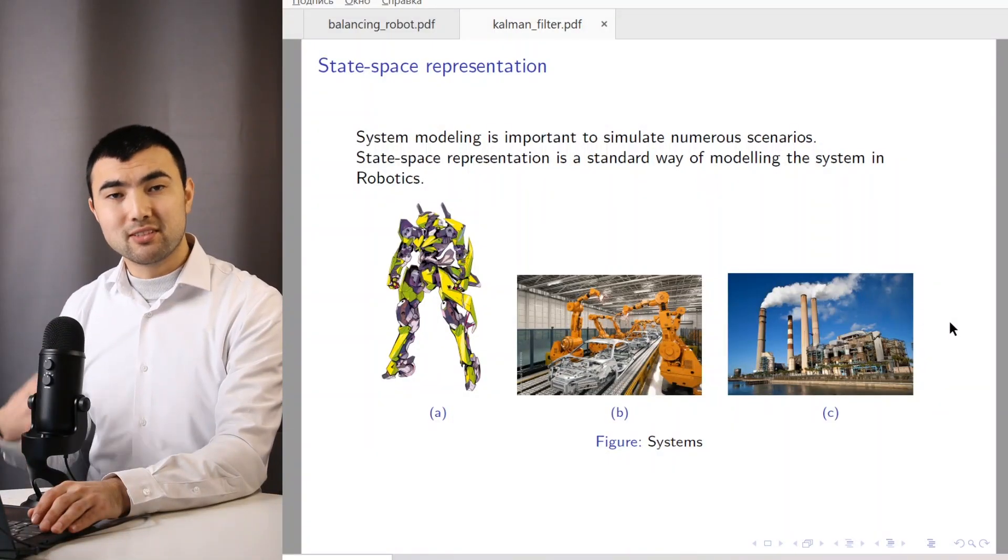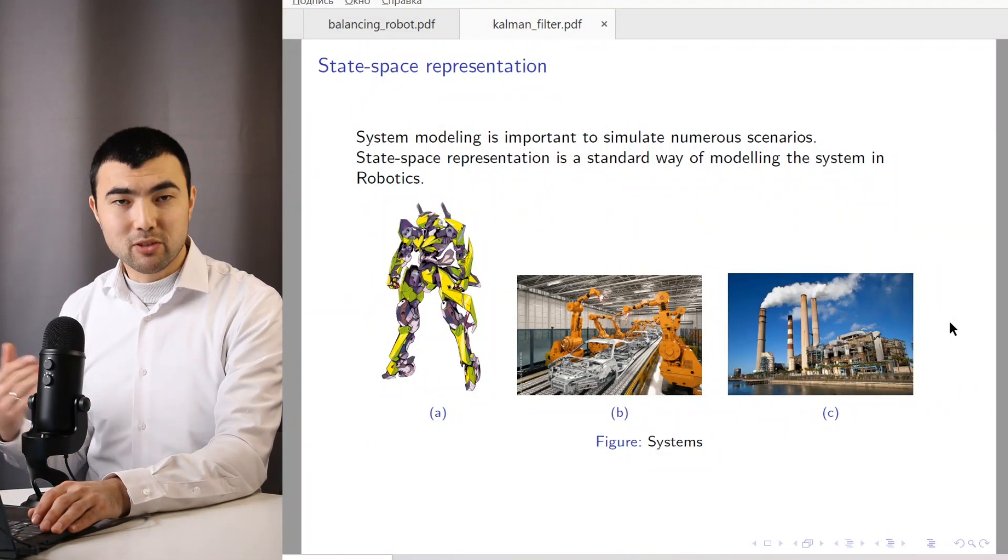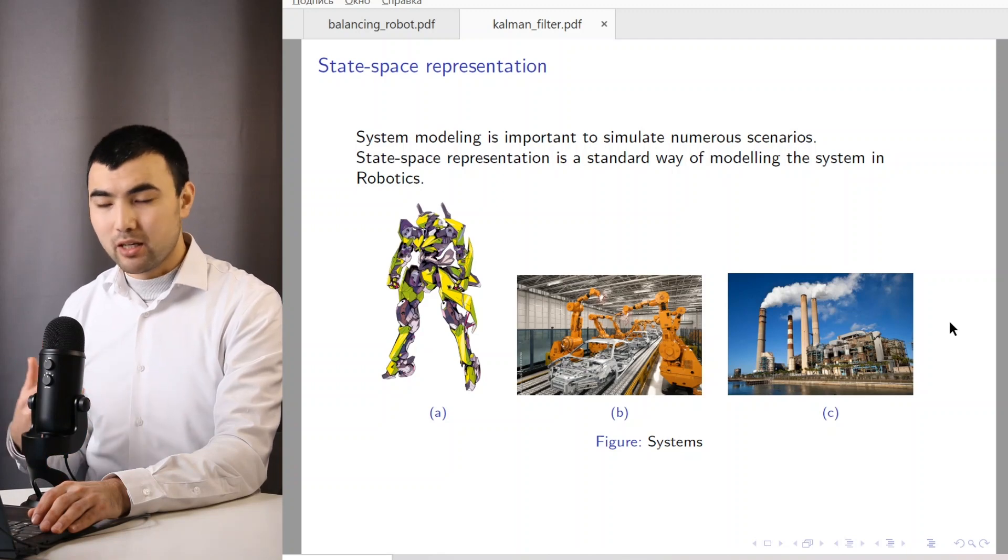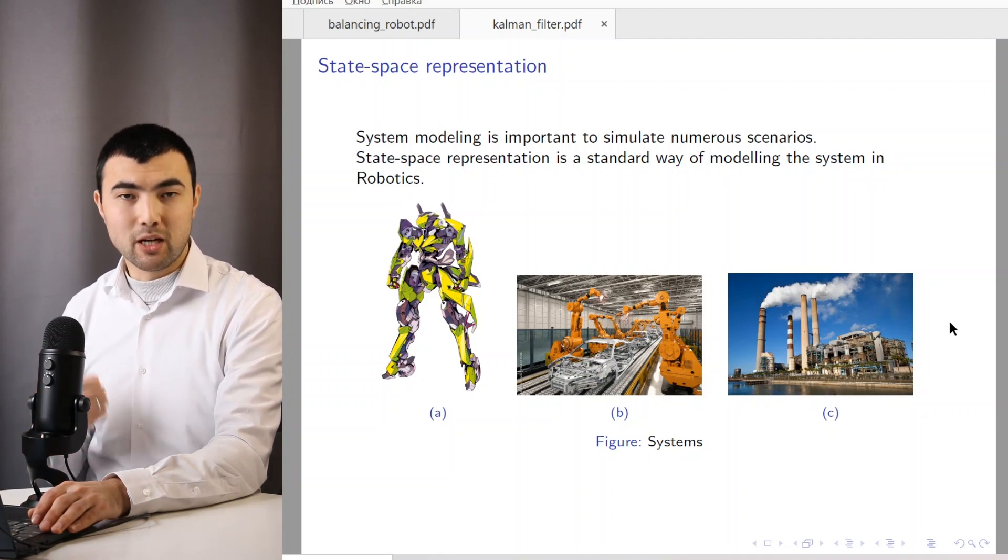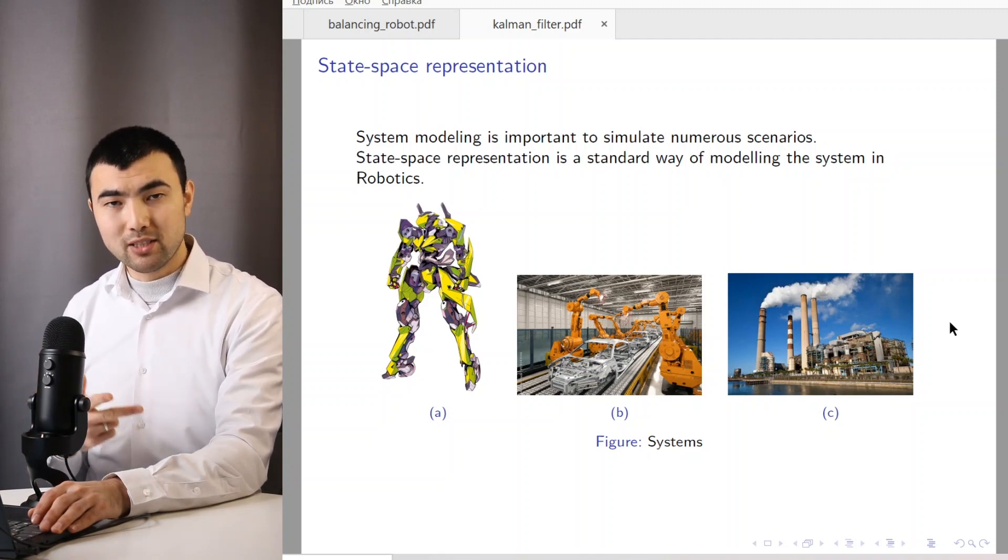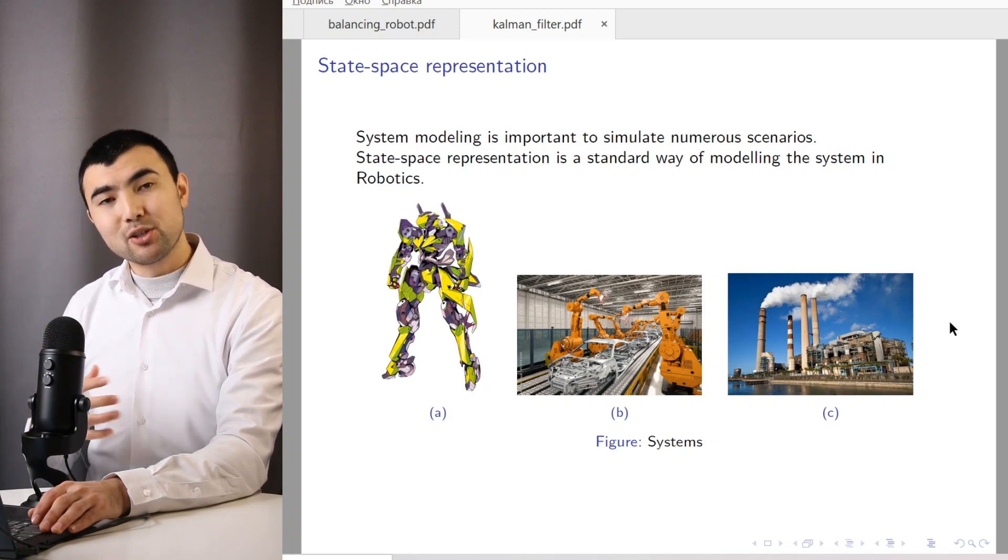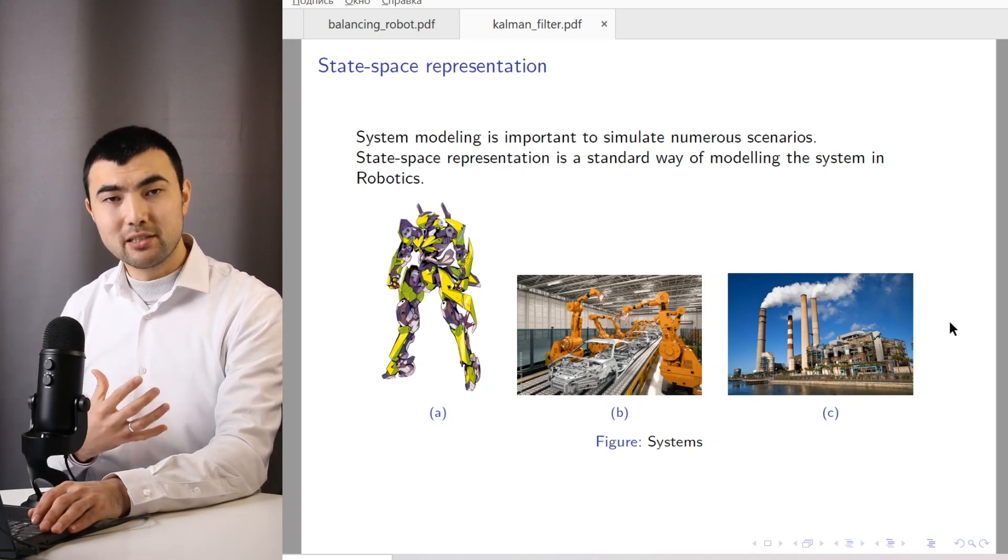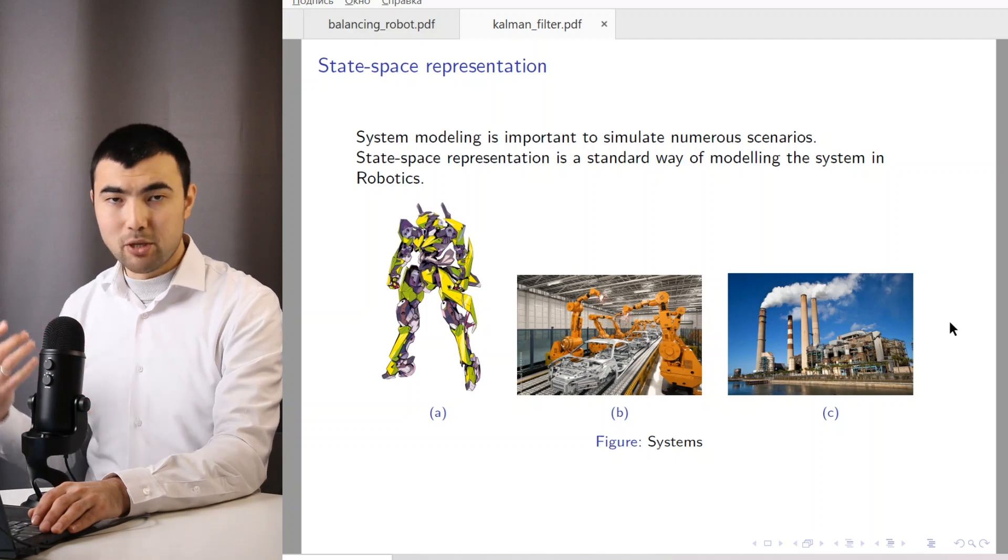Hi, this is STEP School, the second part of the Kalman filter course. Last time we covered probability, the Gaussian distribution, and one-dimensional Kalman filter. The next step is to generalize these ideas, these concepts to multi-dimensional systems.